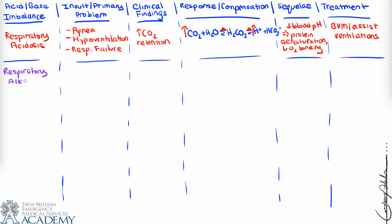Respiratory alkalosis means a primary respiratory problem with blood pH shifting higher, above 7.45. The primary example is hyperventilation syndrome — a true anxiety-based or psychologically-driven hyperventilation or panic attack. The patient will be hyperventilating and breathing extremely fast, but importantly these patients have good oxygenation; they're not having respiratory failure or a metabolic problem explaining their fast breathing.